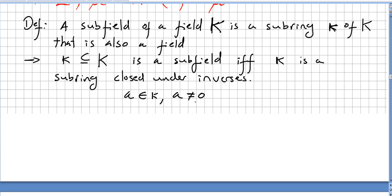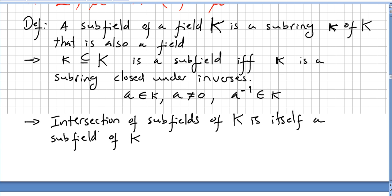So what we mean is if a is an element in small k, of course nonzero element, then we can say that the inverse will be also in small k. Another aspect: an intersection of subfields of K, where K is a field, is itself a subfield of K.